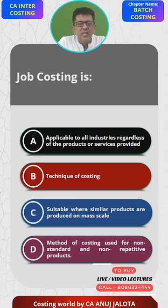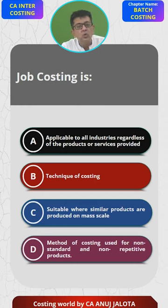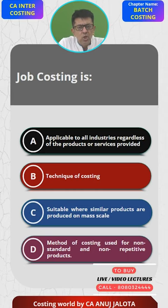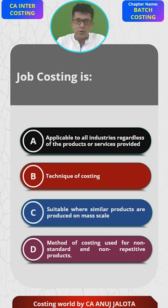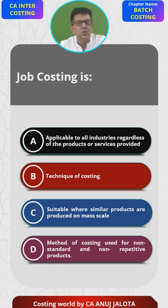Option B: technique of costing. Technique of costing means absorption costing, marginal costing, or historical costing — those are the techniques. Job costing is actually a method of costing because it applies only to companies where each and every unit is done separately, meaning no two articles are uniform and every order received is different. So B cannot be the answer. Option C: suitable where similar products are produced on a mass scale — no, in that case you follow unit costing, not job costing.